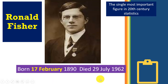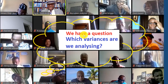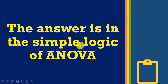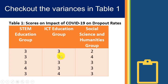Fisher lived for 72 years. He is rated as the single most important figure in 20th century statistics. Now, you may be asking: which variances are we analyzing when we talk about Analysis of Variance? The answer is really very simple and it's based on the logic of ANOVA.